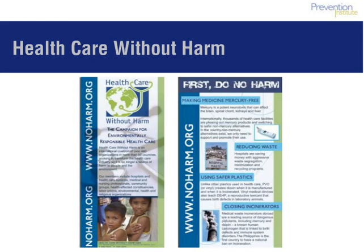Health Care Without Harm is an example of an international coalition of over 440 organizations in more than 50 countries. The coalition works to change organizational practices of hospitals, clinics, and others within the health care sector. Their goal is to engage health care providers to make decisions that are healthier for people and safer for the environment. Through their research and advocacy, many hospitals have eliminated sources of pollution and toxic exposure, while others have begun purchasing locally grown produce, establishing vegetable gardens, and eliminating unhealthy food from their campuses.